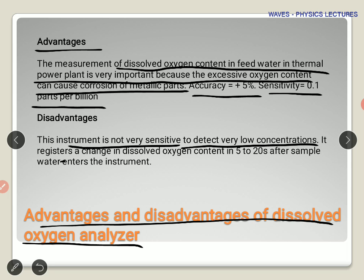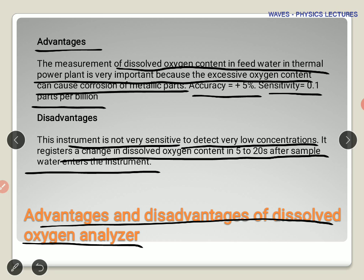Another disadvantage of oxygen analyzers is that they register a change in dissolved oxygen content only 5 to 20 seconds after the sample water enters the instrument. So if dissolved oxygen is present at a minimum level, it cannot be detected at the initial stage — meaning the instrument response is delayed and it's not sensitive enough to catch low dissolved oxygen early.